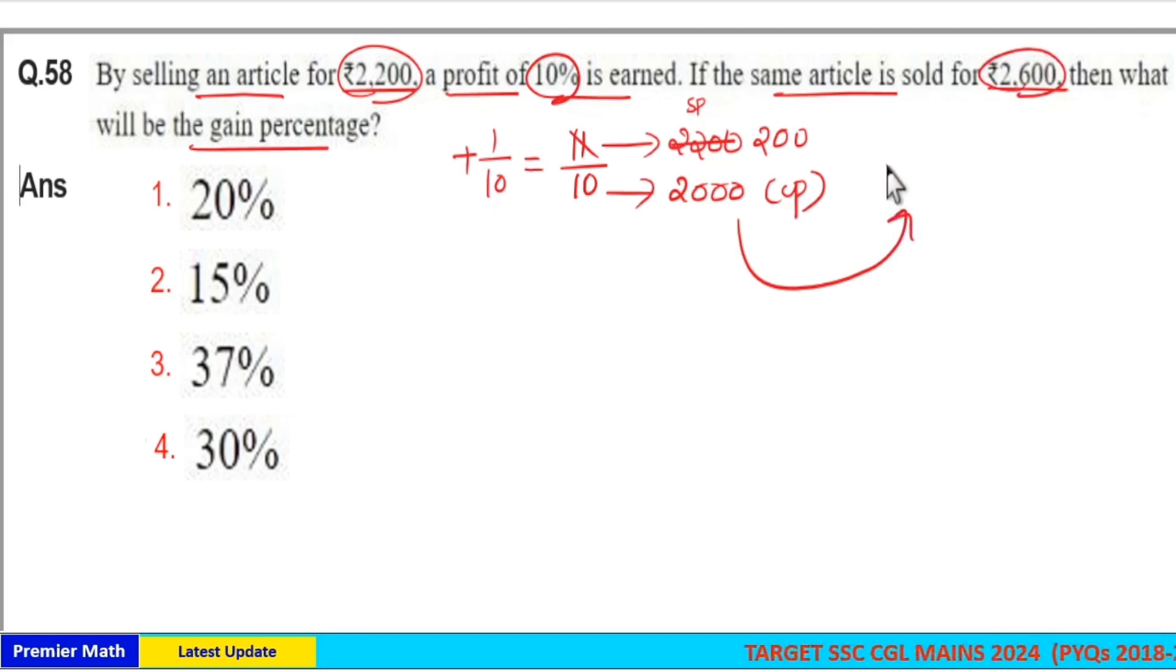And if you are selling the same article at 2600 rupees, which is the selling price, profit here is equal to 600 rupees out of this 2000 cost price. 10 percentage of 2000 is 200, then 600 rupees is 30 percent. So option 4 is your answer.